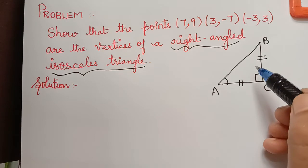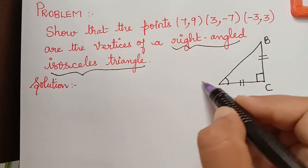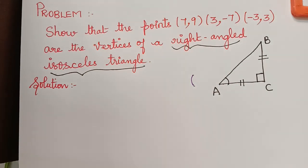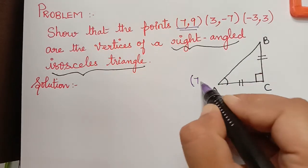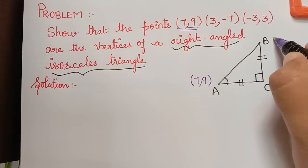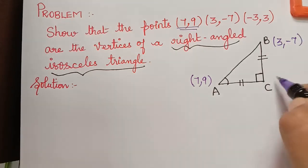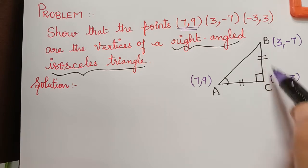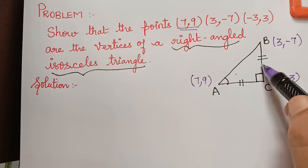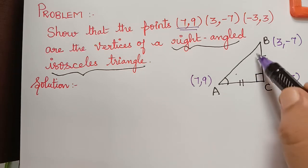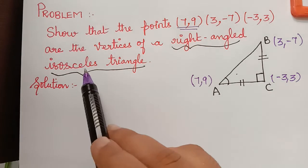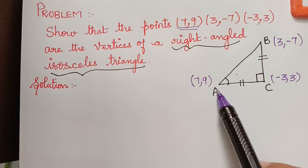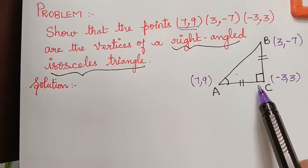So let us see how to prove that now. First of all, let us take the points A, B and C — not plotted geometrically. Point A is (7,9), point B is (3,-7), and point C is (-3,3). What we will be doing is finding the distance between each of the points, then showing that 2 of the distances are equal to prove it is isosceles, and secondly proving that AB squared equals AC squared plus BC squared.